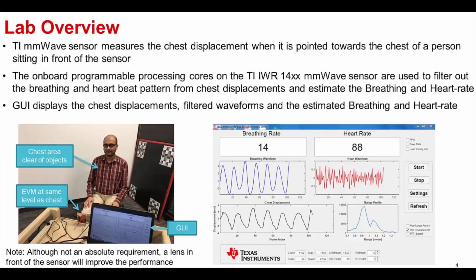Here is a brief overview of the physical setup and the GUI for this lab. A person is required to sit very still in front of the millimeter wave sensor EVM with the sensor pointing towards their chest. The TI millimeter wave sensor will measure the chest displacement of the person, and the onboard programmable processing cores on the device are used to filter out the breathing and heartbeat pattern from these chest displacements and estimate the breathing rate and the heart rate. The chest displacements, the breathing and heartbeat waveforms as well as the breathing rate and heart rate are all displayed on the lab GUI.